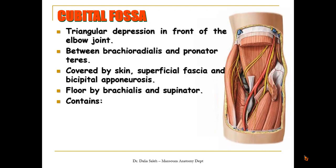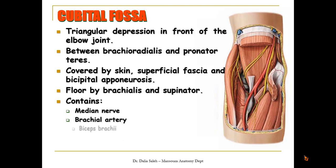The cubital fossa contains the following structures from medial to lateral: the median nerve, the brachial artery, the biceps brachii tendon, and the radial nerve.